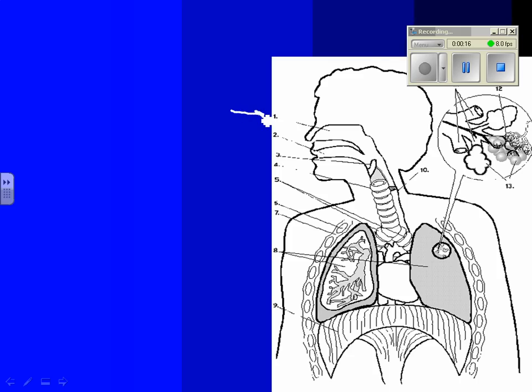Part number one right here is the nasal cavity, or nose. I like the short, simple name, nose. On here it says that the nose's job is to filter and warm the air.